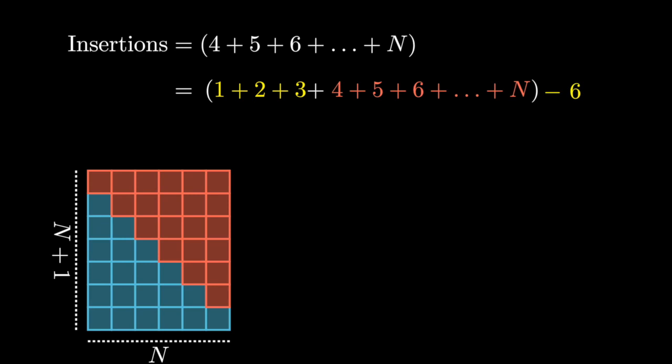The number of blocks in the rectangle is equivalent to the area of the rectangle where each unit is a single block. This means that our rectangle has n times n plus 1 blocks. Consequently, the result of the sum is n times n plus 1 divided by 2, which is also sometimes called Gauss's formula.